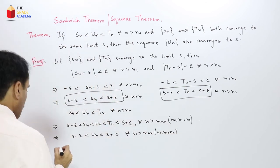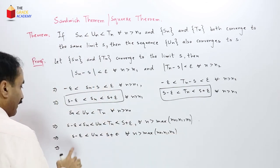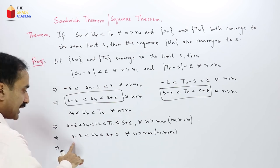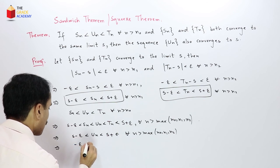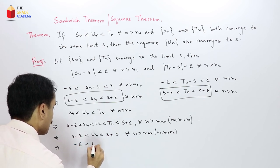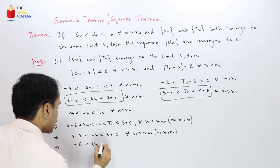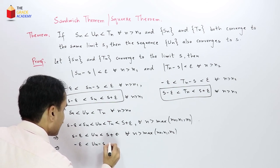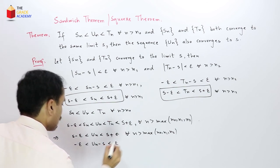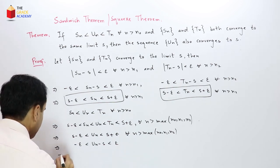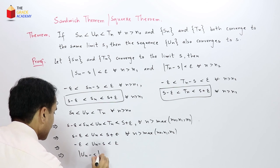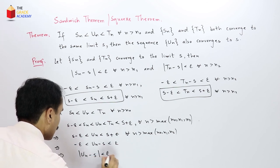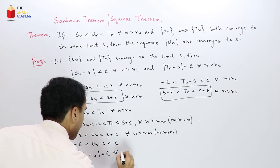Subtracting S from each side of this inequality gives −ε < Un − S < ε, which we can write as |Un − S| < ε.